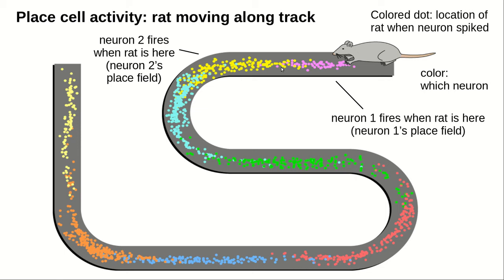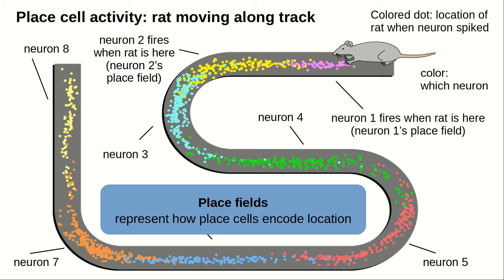I numbered these neurons in the order where their place fields occur. The different colored dots show the place fields of neurons 3, 4, 5, 6, 7, and 8. The place fields represent how the neuron's activity encodes the rat's location.